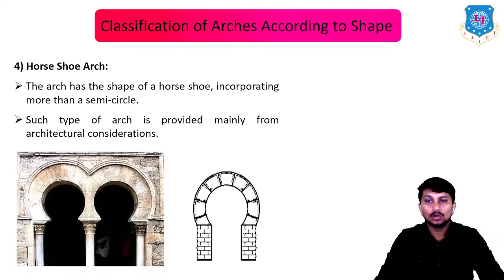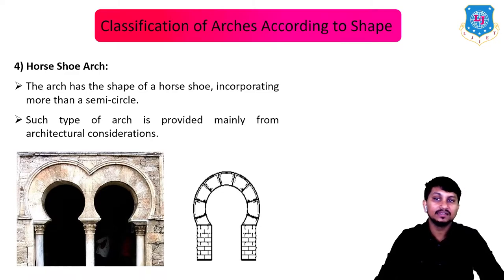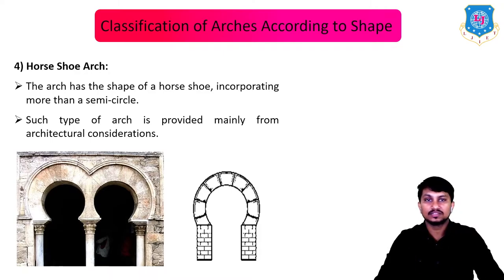Next is horseshoe arch. The shape of this arch resembles a horseshoe, incorporating more than a semicircle. Such type of arch is provided mainly for architectural considerations.